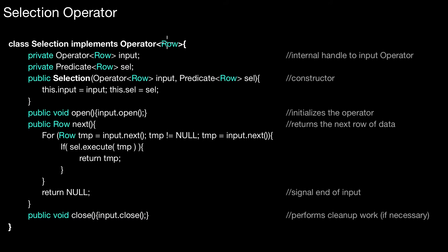In the selection operator we have two private attributes. The input operator as before, and this predicate called sel, which is executed later in the next call. Open works as before - we call open on the input operator. We also call close on the input operator.